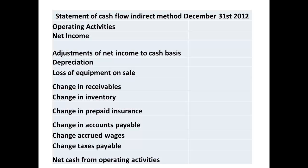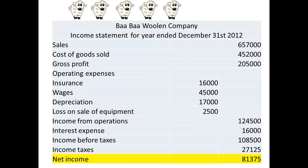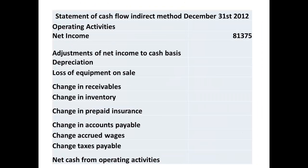The first figure that we require is that for net income. This figure is obtained from the income statement for Barbar Wool & Co. and is $81,375. We enter this figure to the statement of cash flow.